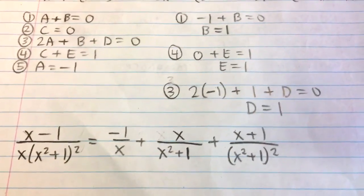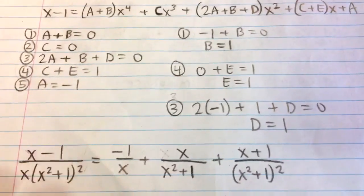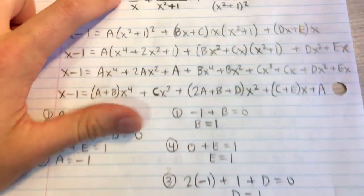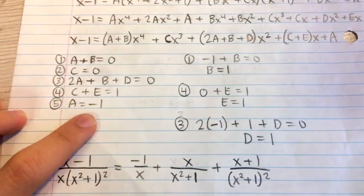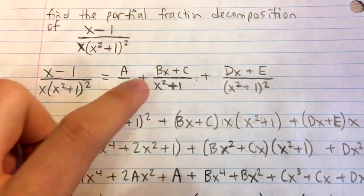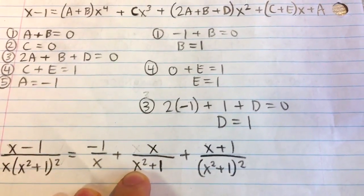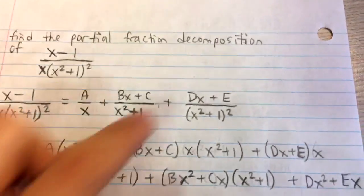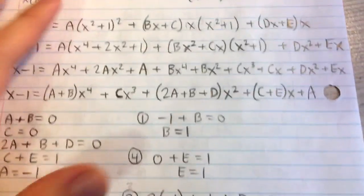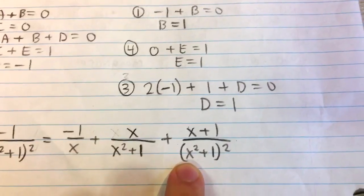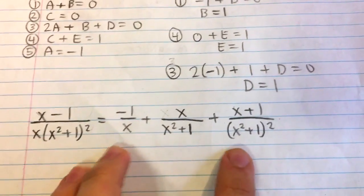Now we have all the variables: A equals negative one, B equals one, C equals zero, D equals one, and E equals one. Plugging back into our original equation, we get negative one over x, plus x over (x squared plus 1), plus (x plus 1) over (x squared plus 1) all squared. This is our final answer.